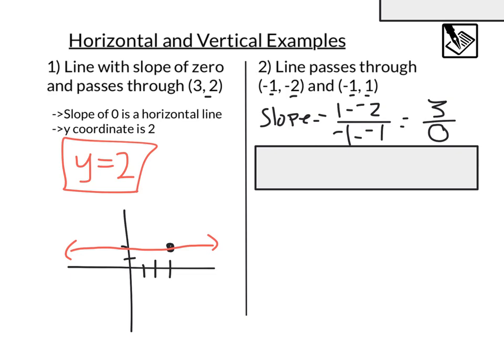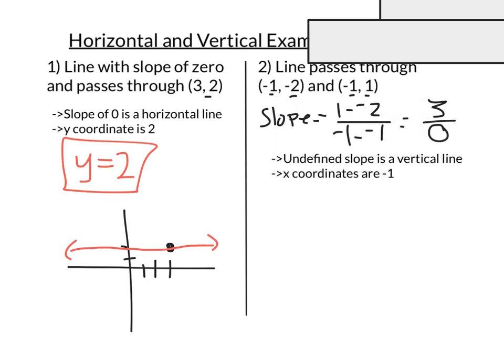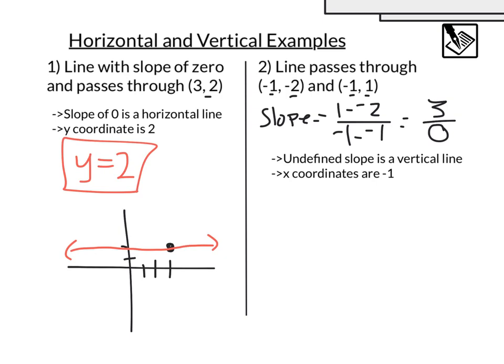Uh-oh, we know we don't like to divide by 0 in math, it doesn't make much sense. So in this case, we have an undefined slope, and we know that's a vertical line.